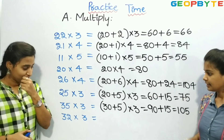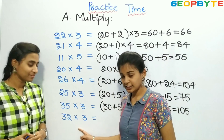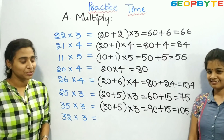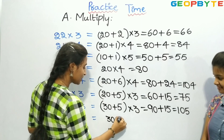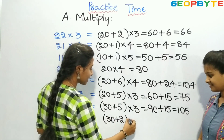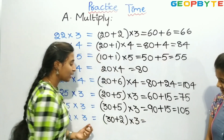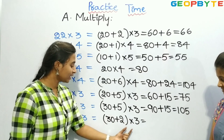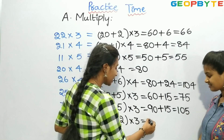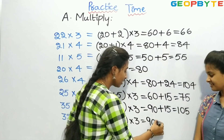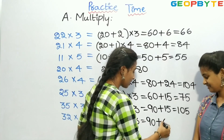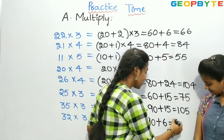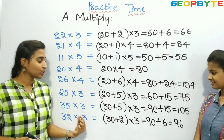Now let us see the 8th one: 32 into 3. Children, we need to split 32 as 30 plus 2, into 3. We need to multiply 30 and 3 plus 2 and 3. 3 threes are 9, and we have a 0, so it is 90. Plus, 2 threes are 6. So 90 plus 6 is equal to 96. So 32 threes are 96.